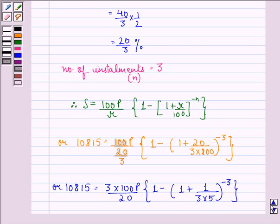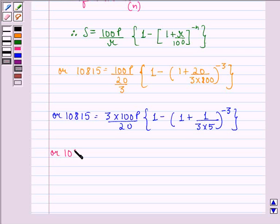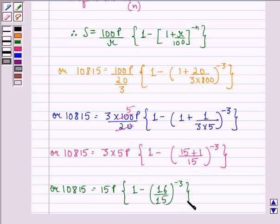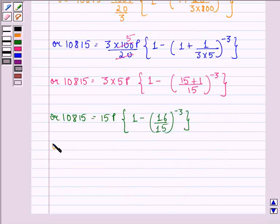This is same as 10,815 equals 3 times 5P, because 100 divided by 20 is 5, multiplied by 1 minus (15 plus 1 divided by 15) to the power minus 3. Or 10,815 equals 15P multiplied by 1 minus (16 upon 15) to the power minus 3.